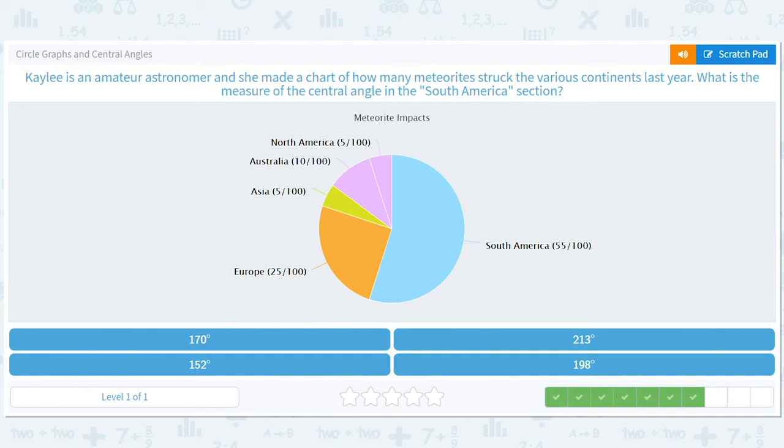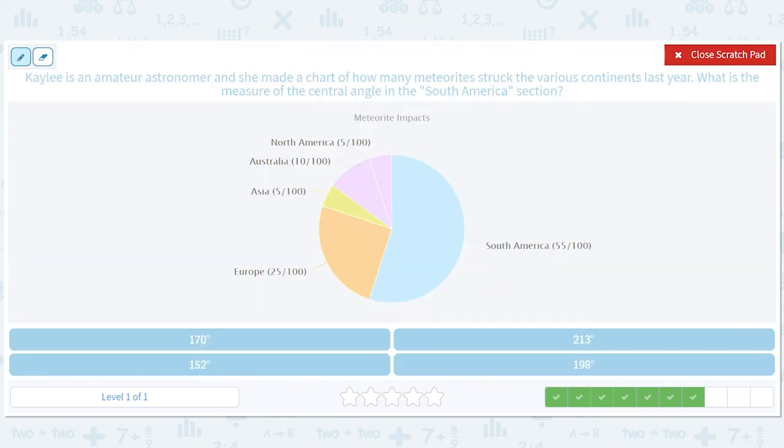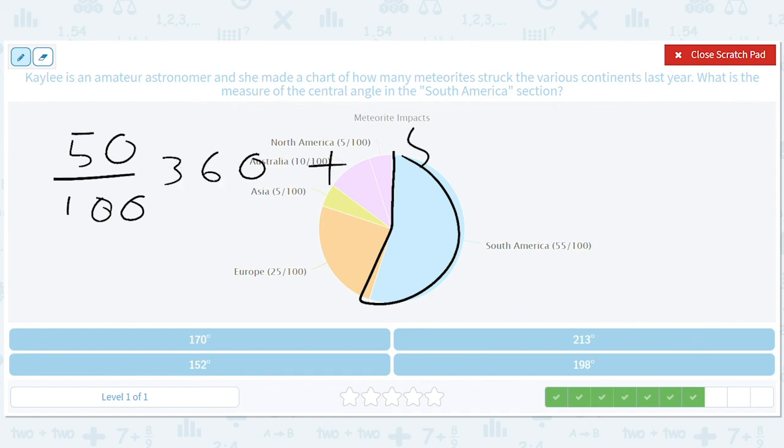The South America section. You know what, guys? We're tired, right? It's been a long day. Okay. Do you guys remember what 55 out of 100 was? I do. 50 out of 100 times 360 plus 5 out of 100. Remember that trick? And this was just half, so that's 180. And this was a tenth of that, so that's 18. So that ended up being 198.